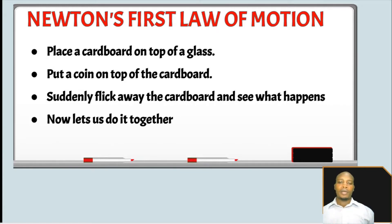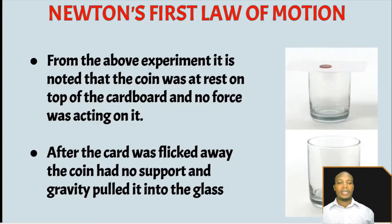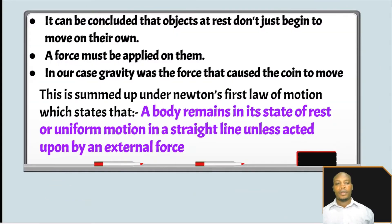So, what do you see? You see that the coin falls into the glass. From the experiment, it is noted that the coin was at rest on top of the cardboard and no force was acting on it. After the card was flicked away, the coin had no support and gravity pulled it into the glass. It can be concluded that objects at rest don't just begin to move on their own — a force must be applied on them. In our case, gravity was the force that caused the coin to move.